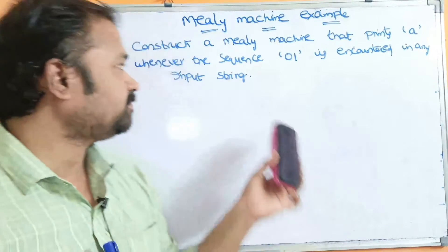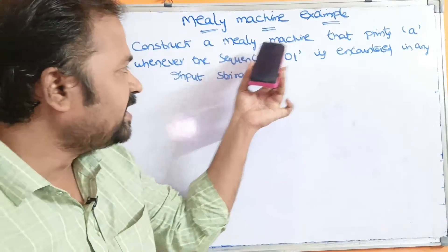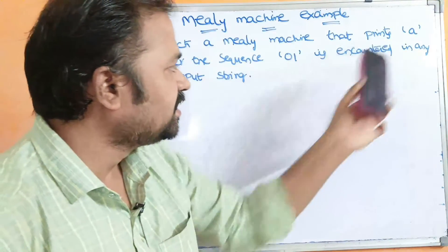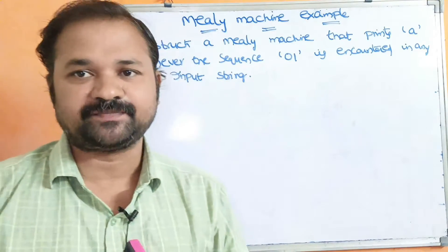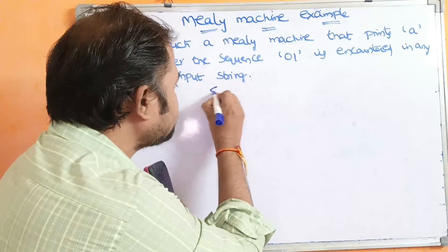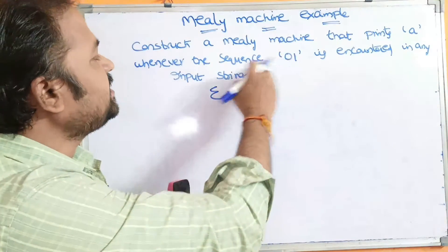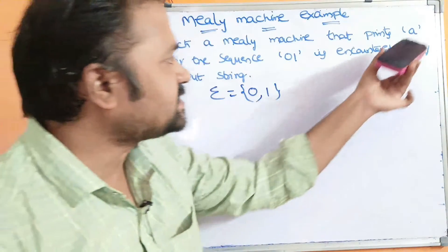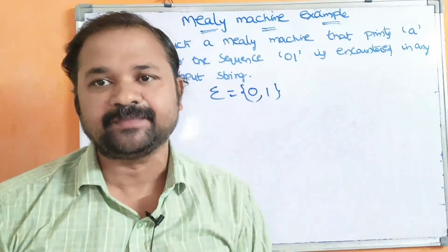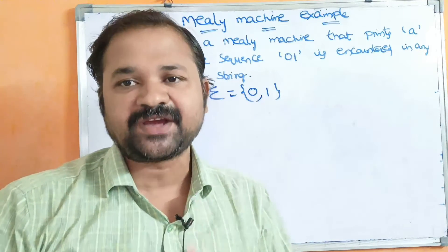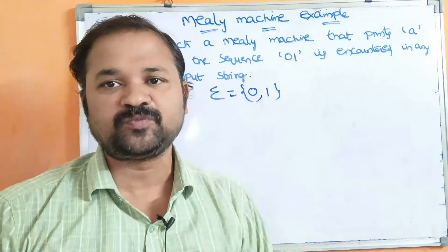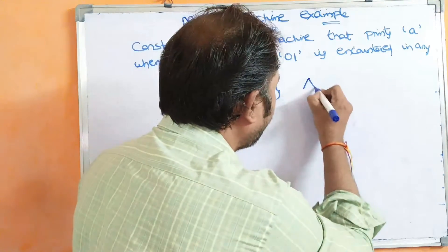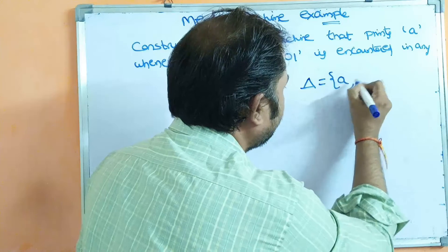Let us see this example. Construct a Mealy machine that prints A whenever the sequence 0,1 is encountered in any input string. The input alphabet sigma contains 0 and 1. The output alphabet contains A and B. So if the sequence 0,1 is encountered, then we have to print A as the output. Otherwise, we have to print B as the output. The output alphabet is equal to {A, B}.